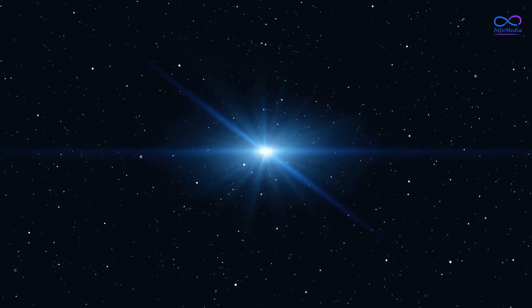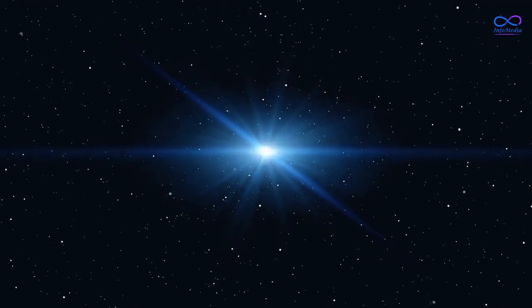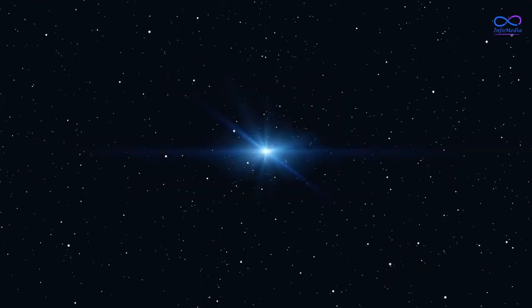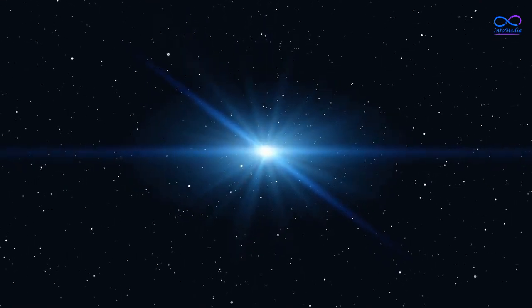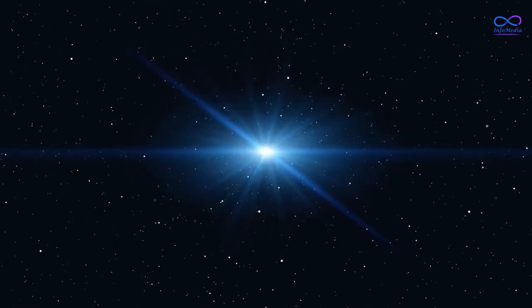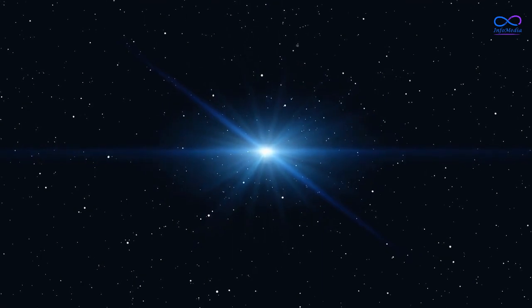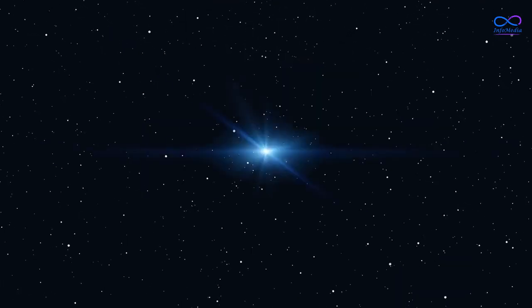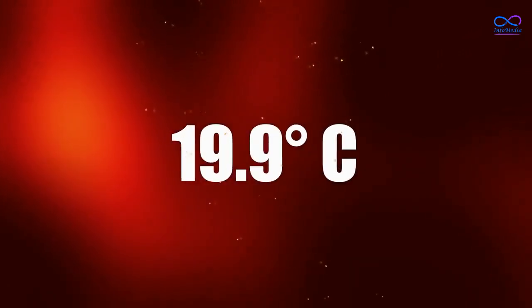One of the most remarkable features of HD 189733 b is its close proximity to its parent star. This planet orbits at a distance of only 0.031 astronomical units from its star, which means that it completes one orbit around its star in just 2.2 days. This also means that the planet is very hot,